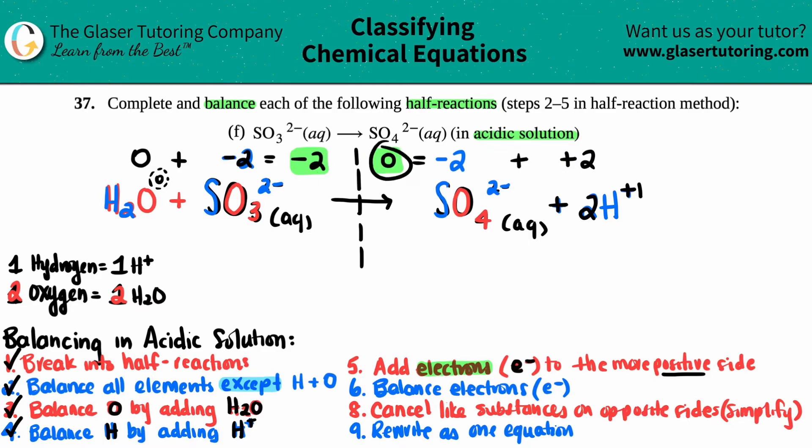Now you're going to add those electrons to the more positive side. Well, out of a negative two and a zero, which one is more positive? The zero, right? So I know I'm going to add electrons on this side. But now the question is, how many do I add? Do I add one? Do I add two? Do I add three?